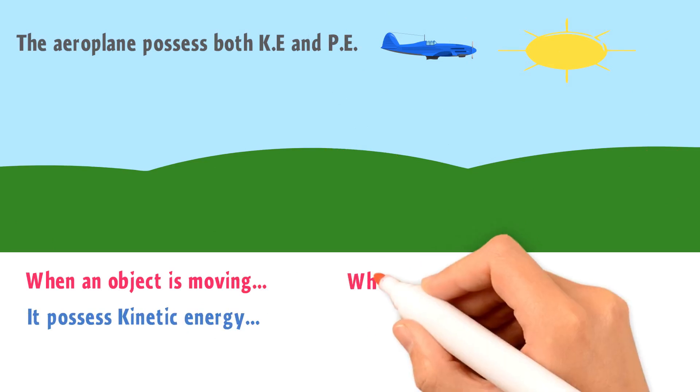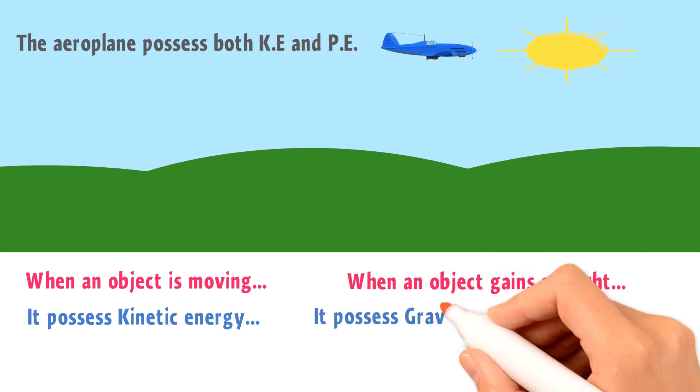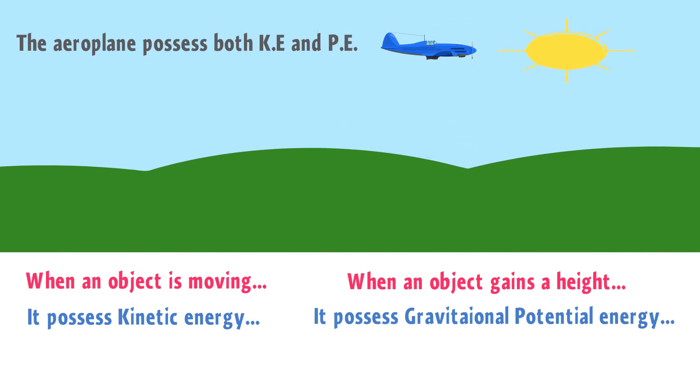We also learn that when an object gains a certain height in a gravitational field, it also possesses gravitational potential energy. Hence, the flying aeroplane above the earth possesses both kinetic energy and potential energy.